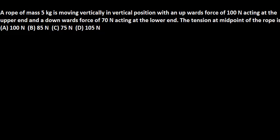This is about a rope having a mass of 5 kg that is moving vertically in vertical position with an upward force of 100N acting at the upper end and a downward force of 70N acting at the lower end.